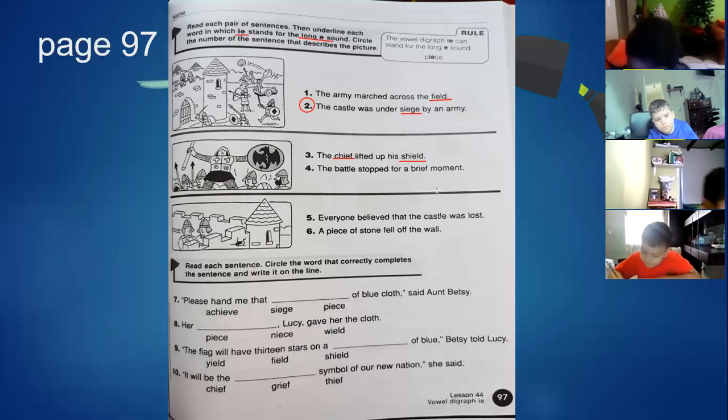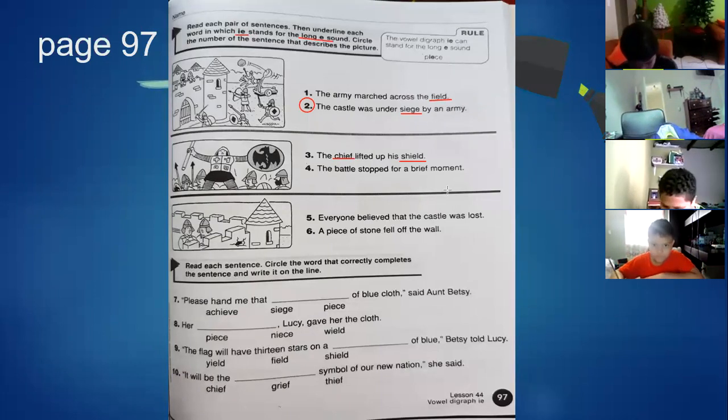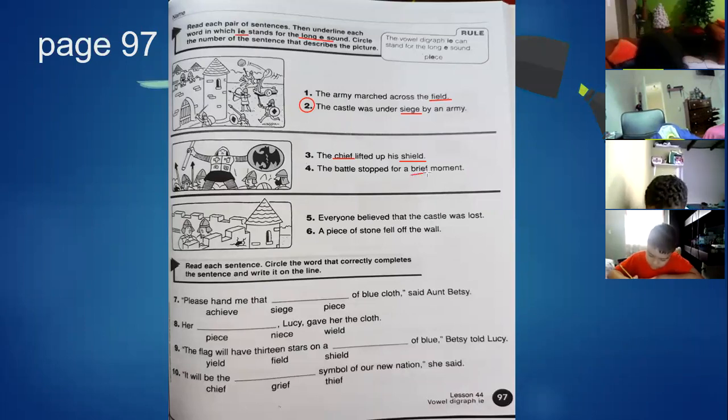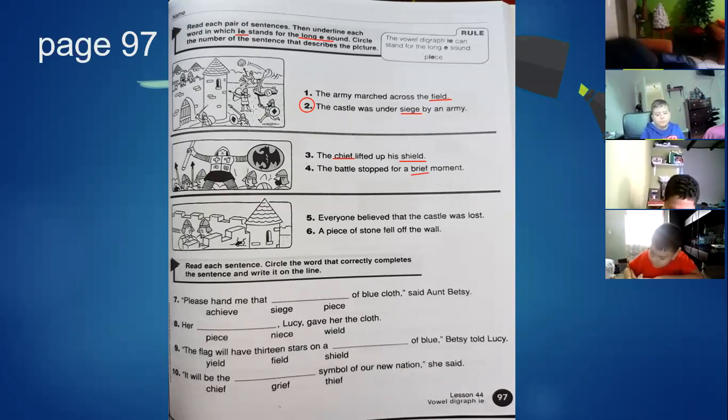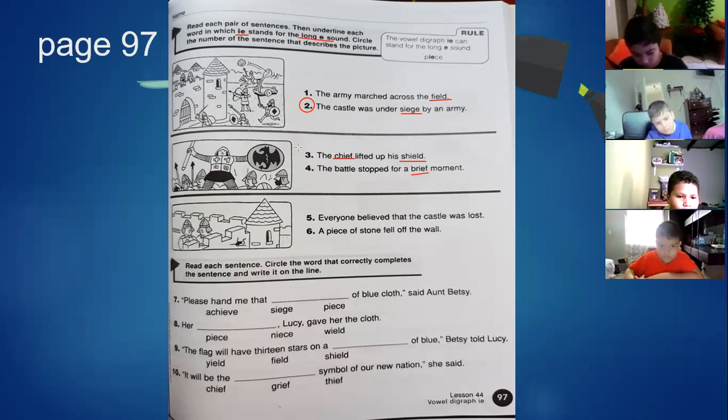Second exercise. The chief lifted up his shield. So how many words we have to do? Shield. And chief. The battle stopped for a brief moment. Brief. Now which sentence describes the picture? The three. The chief lifted up his shield. Yeah. The number three.